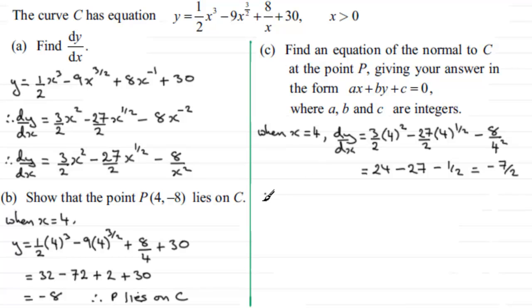The perpendicular gradient, the gradient of the normal, is given by the negative reciprocal of the gradient of the tangent. So the gradient of the normal is the negative reciprocal of -7/2, which is 2/7.